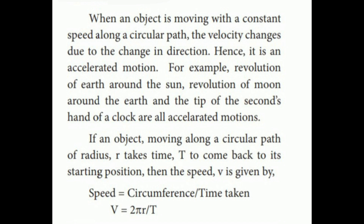When an object is moving with a constant speed along a circular path, the velocity changes due to the change in direction. Hence it is an accelerated motion. For example, the revolution of the Earth around the Sun, the revolution of the Moon around the Earth, and the tip of the seconds hand of a clock are all accelerated motion.